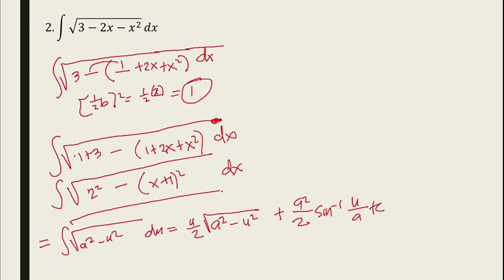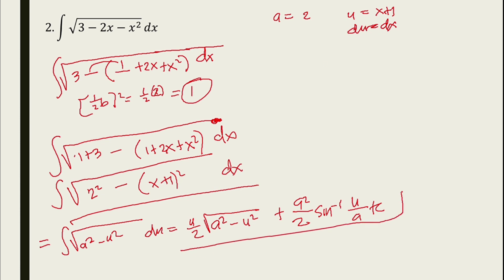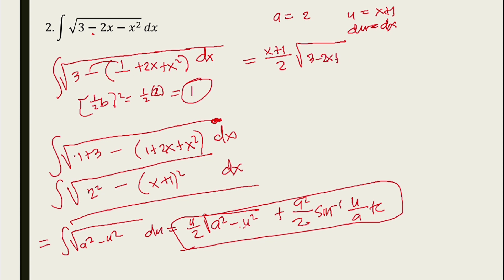In this case, a equals 2 and u equals x plus 1, so du equals dx. Applying the formula: (x plus 1)/2 times the square root of 4 minus (x plus 1) squared — which is just 3 minus 2x minus x squared — plus...